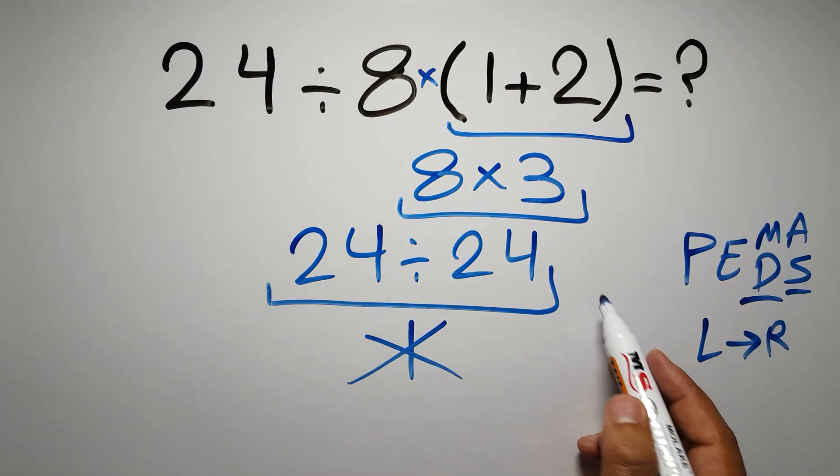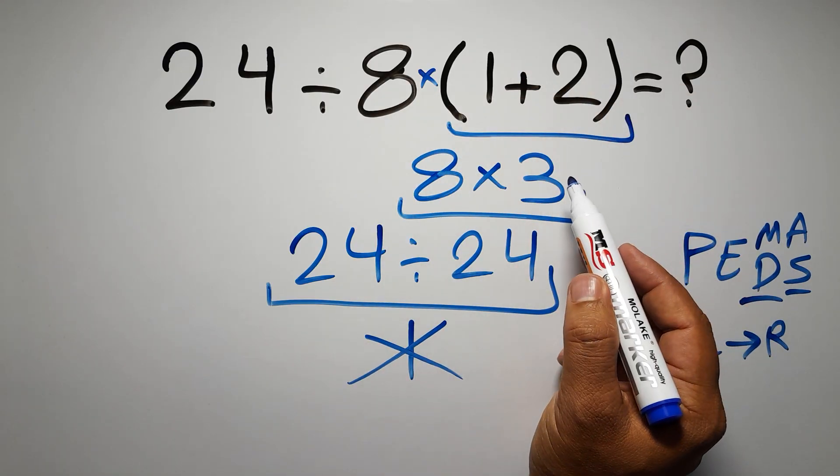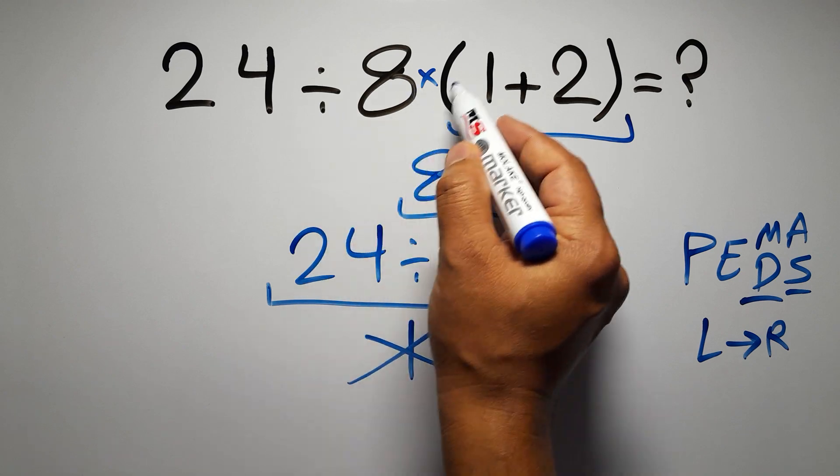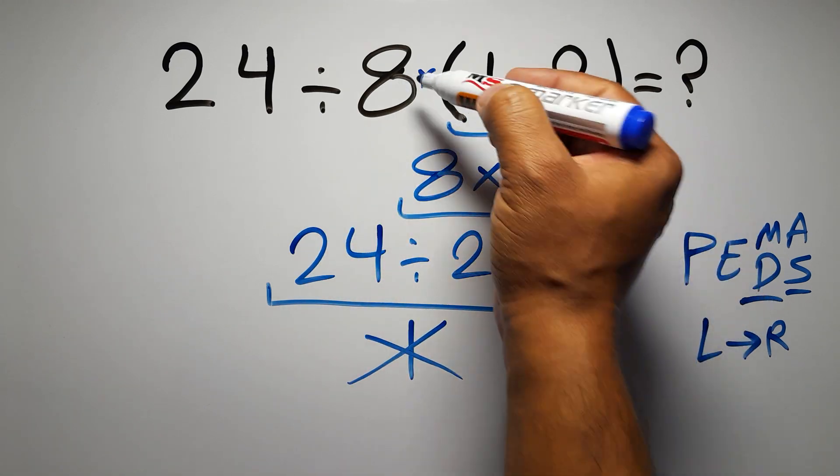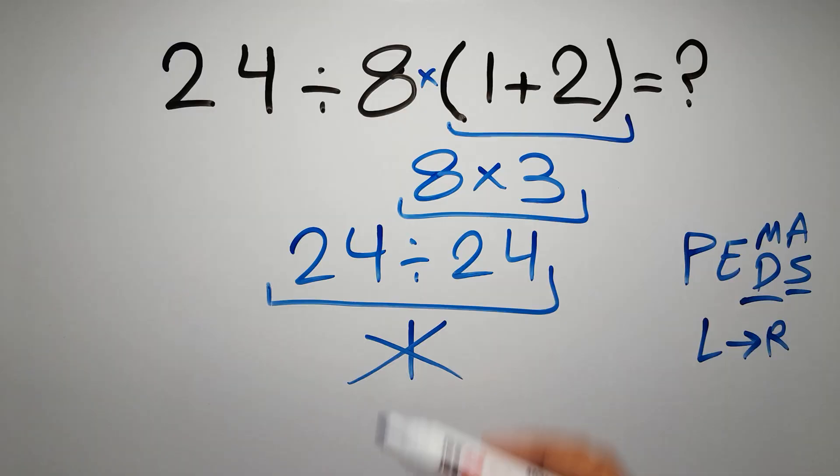So, according to PEMDAS, first we have to do this parentheses, then this division, and finally this multiplication. If we do this multiplication before this division, it is wrong.